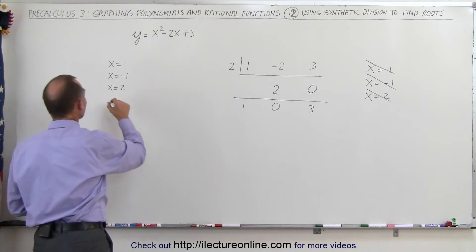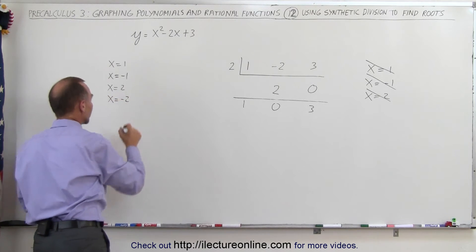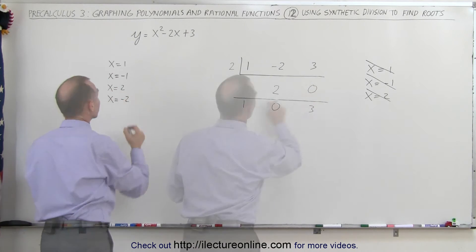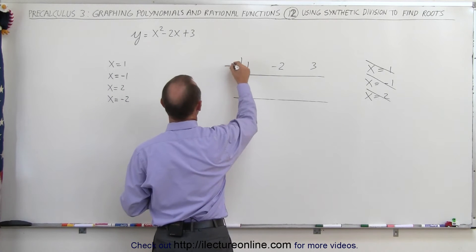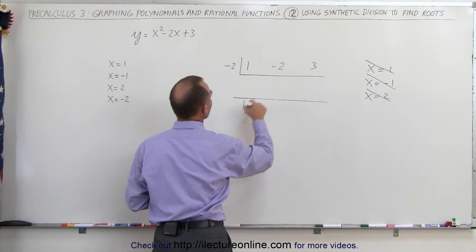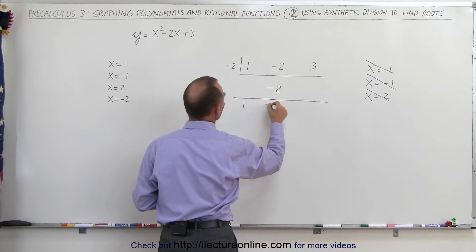How about x equals negative 2? Let's try that. We try negative 2. So negative 2 times 1 is negative 2, add it together, you get negative 4.